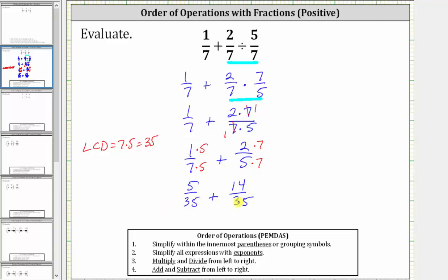And now that we have a common denominator, we can determine the sum. The denominator remains 35. And the numerator is five plus 14, which is 19. The only common factor between 19 and 35 is one. And therefore 19 thirty fifths is simplified.